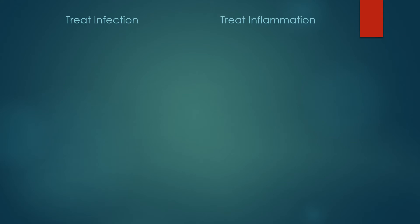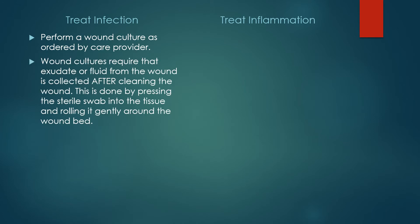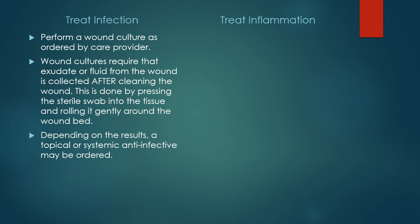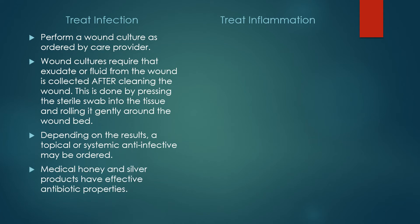Next, you want to treat any infection or inflammation in the wound. For infection, perform a wound culture as ordered by the care provider. Wound cultures require that exudate or fluid from the wound is collected after cleaning the wound. This is done by pressing a sterile swab into the tissue and rolling it gently around the wound bed to press out the fluid onto the swab. Depending on the results, a topical or systemic anti-infective may be ordered. Keep in mind that medical honey and silver products do have effective antibiotic properties. If the wound has a fungal odor, an antifungal may be ordered.